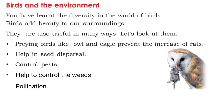The fourth way is controlling weeds — birds help control the growth of weeds in plants. The fifth way is pollination — birds assist in the fertilization of plants by helping in pollination.